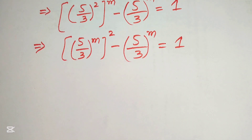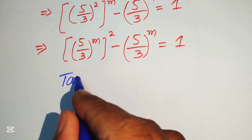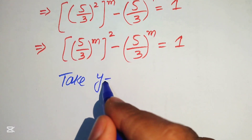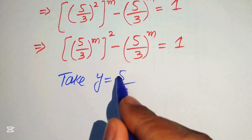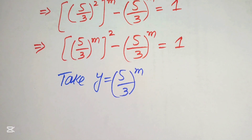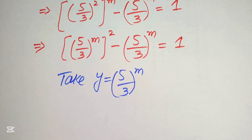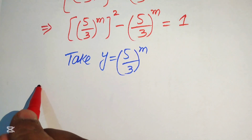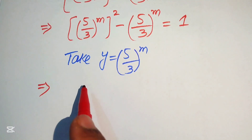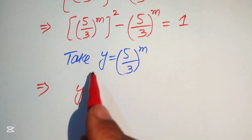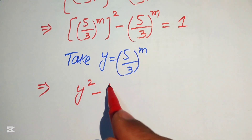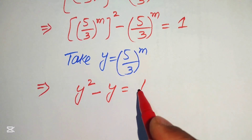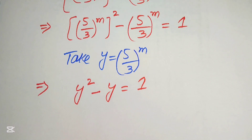We convert this exponential equation into quadratic form by letting y equal (5/3)^m. With this substitution, (5/3)^m becomes y, so the equation is written as y squared minus y equals 1.